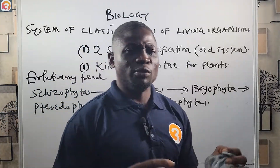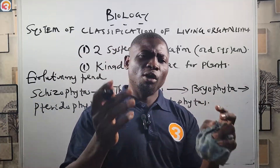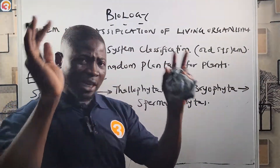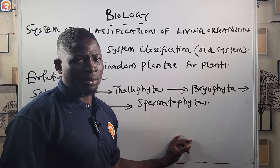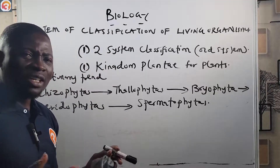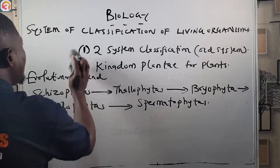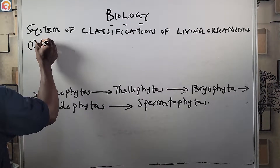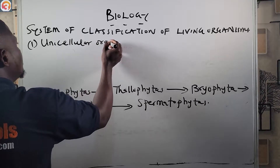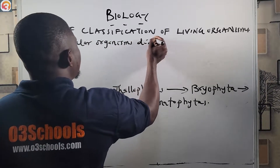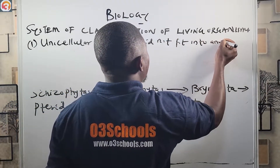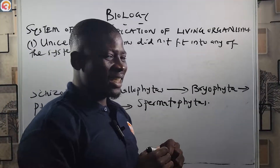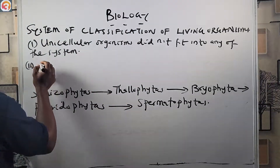However, there were some drawbacks to the two-kingdom system, which is why it is called the old system — a more upgraded, inclusive system of classifying living organisms was needed. One of the drawbacks is that unicellular organisms did not fit into any of the kingdoms.